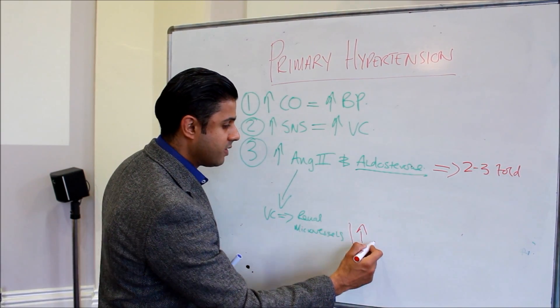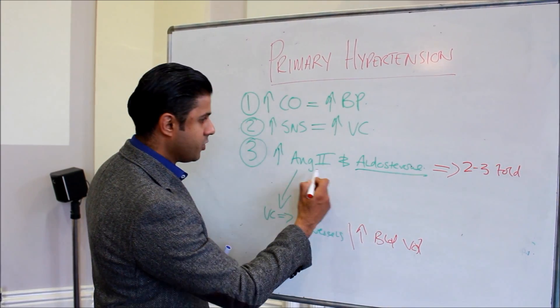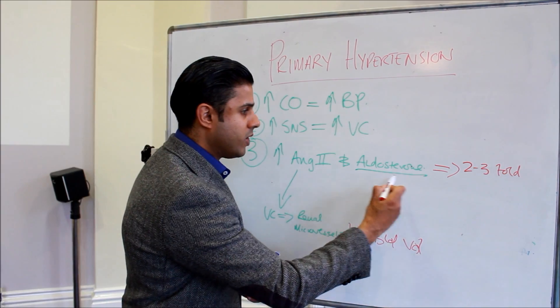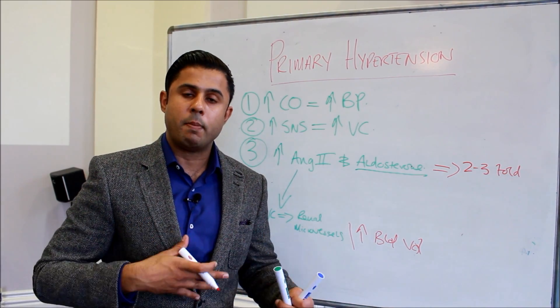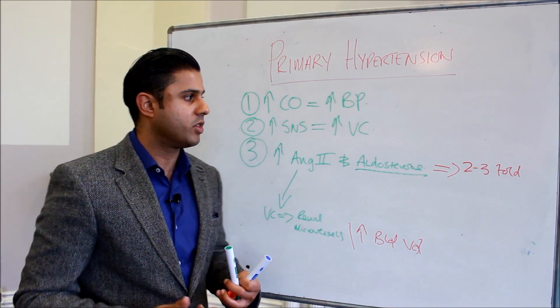You get an increase in blood volume because of impaired kidney function due to angiotensin 2, and then you get increased salt and water back into the extracellular fluid, and therefore an increase in blood volume and blood pressure.